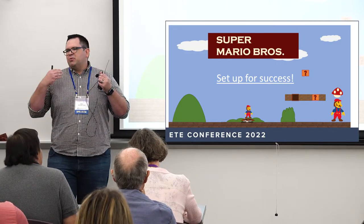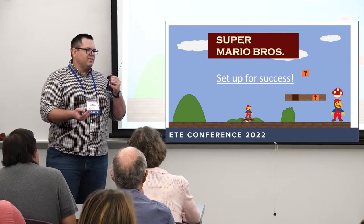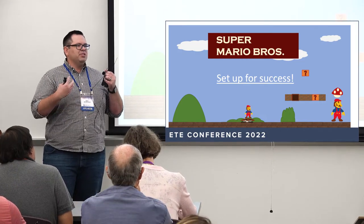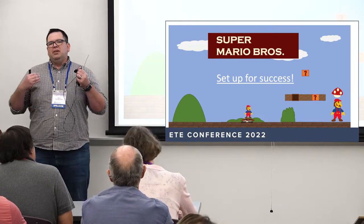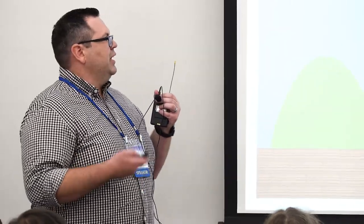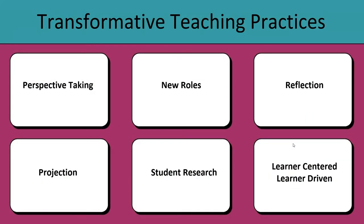That's how our courses ought to be as well — setting students up for success. Every student, when trying out a different class, has to learn a new syllabus, and it shouldn't be Greek to them. It should really set them up from the beginning to help them understand what is expected of them so they can be successful. So these are the things we're going to talk about today — how to implement transformative learning through six topics: perspective taking, new roles, reflection, projection, student research, and learner-centered, learner-driven.